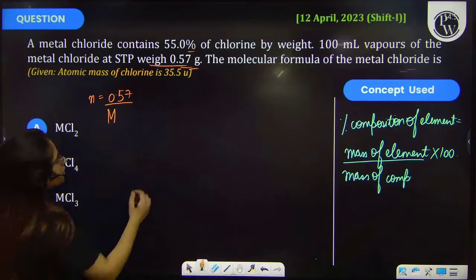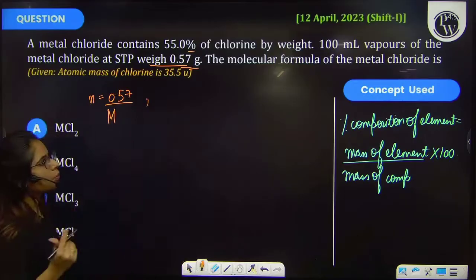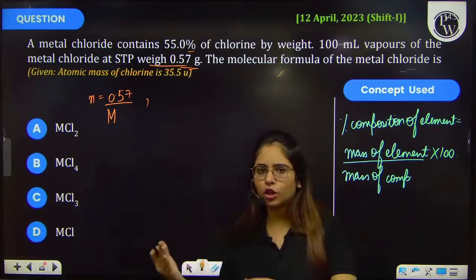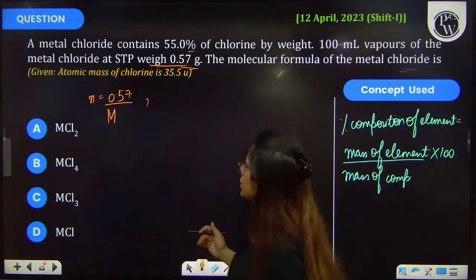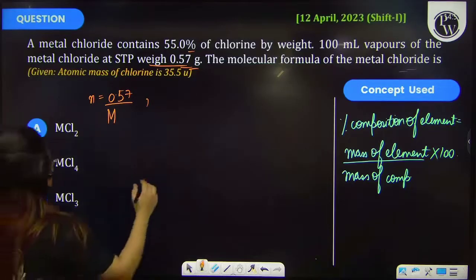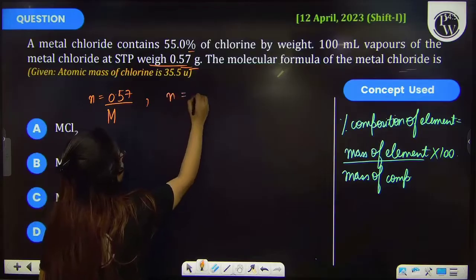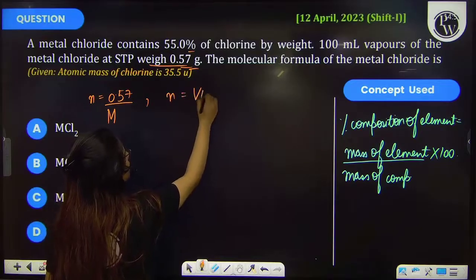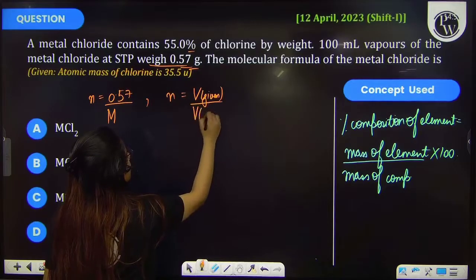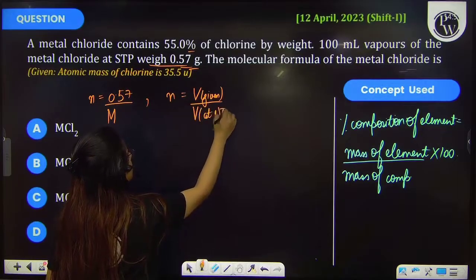Also we know that number of moles is equal to volume upon volume at STP. So it will be equal to volume given divided by volume at STP.